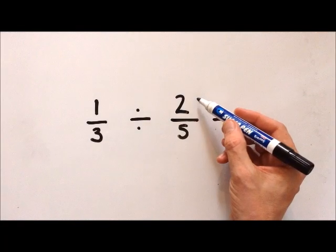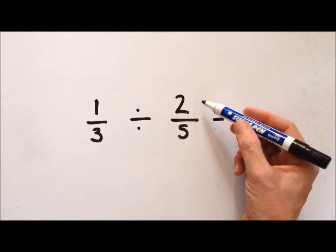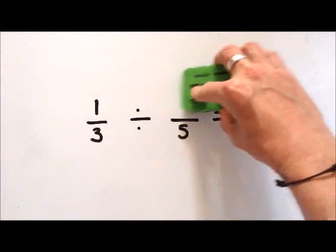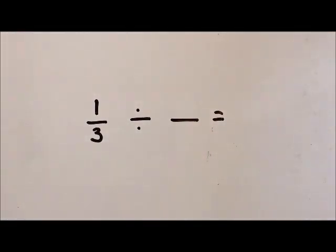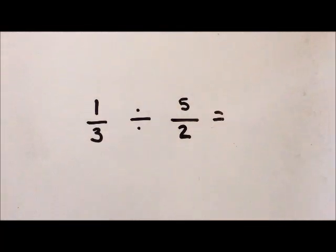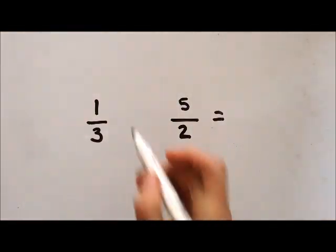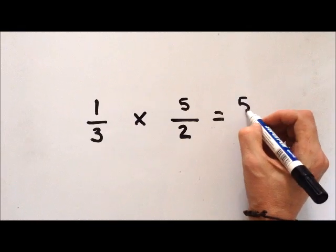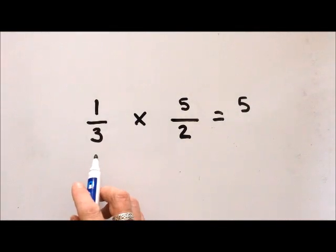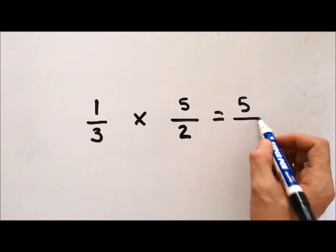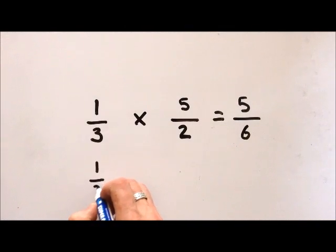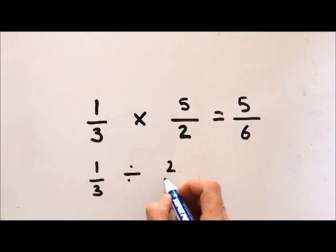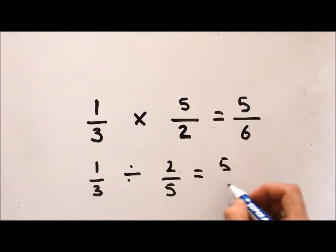What we do is we switch the second fraction over — we switch the denominator with the numerator. This is called finding the reciprocal. So we put the 5 on the top and the 2 on the bottom. And now because it's the inverse, we remove the division and put the multiplication in. Then we solve this problem like a multiplication problem: 1 times 5 is 5, and 3 times 2 is 6. And there we have the answer: 1 third divided by 2 fifths equals 5 sixths.